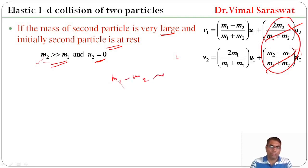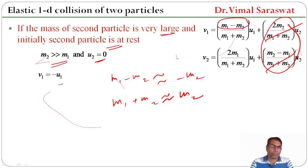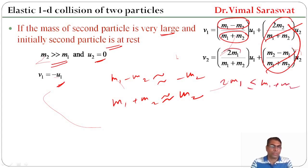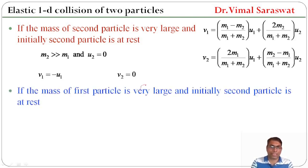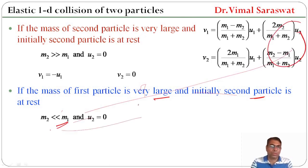Since M2 cancels out, V1 = −U1. And since 2M1 is very much less than M1 + M2, V2 ≈ 0. So the second particle remains at rest after collision, whereas the first particle bounces back with the same speed. Special case 5: if the mass of the first particle is very large and the second particle is initially at rest (U2 = 0, M1 >> M2), then M1 − M2 ≈ M1 and M1 + M2 ≈ M1.